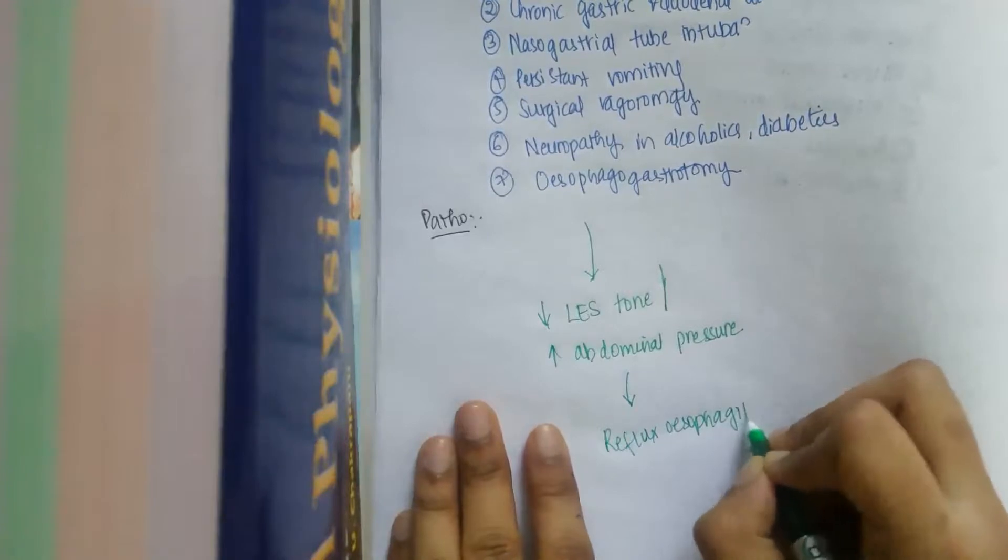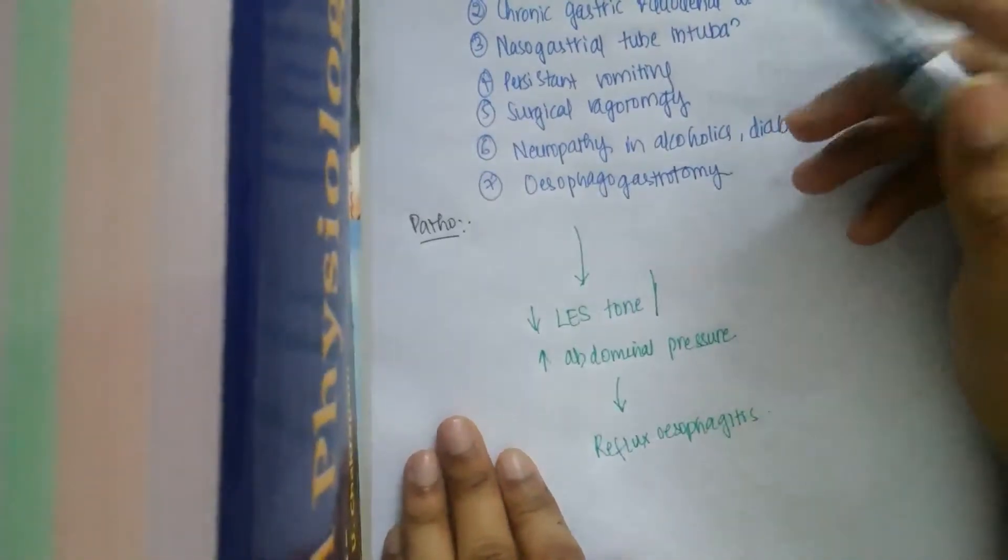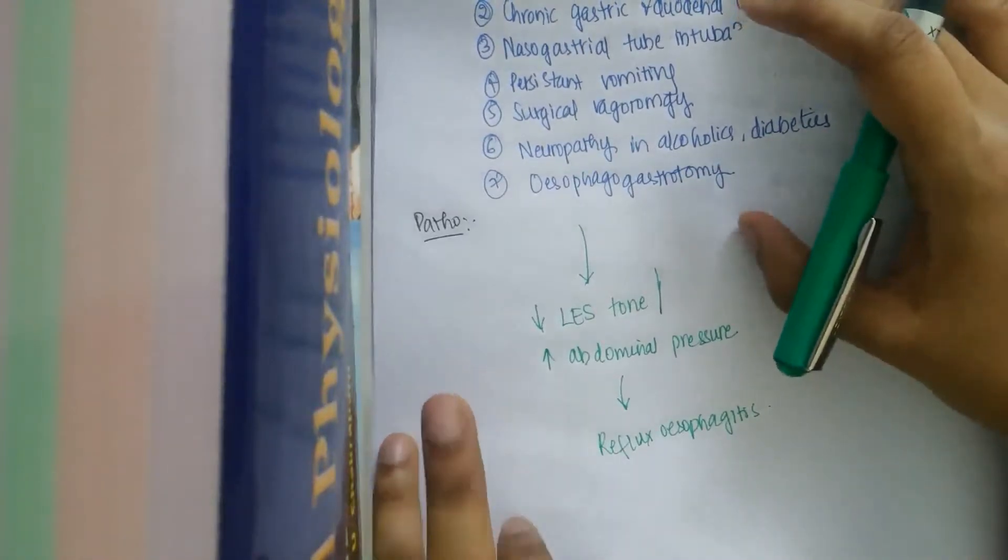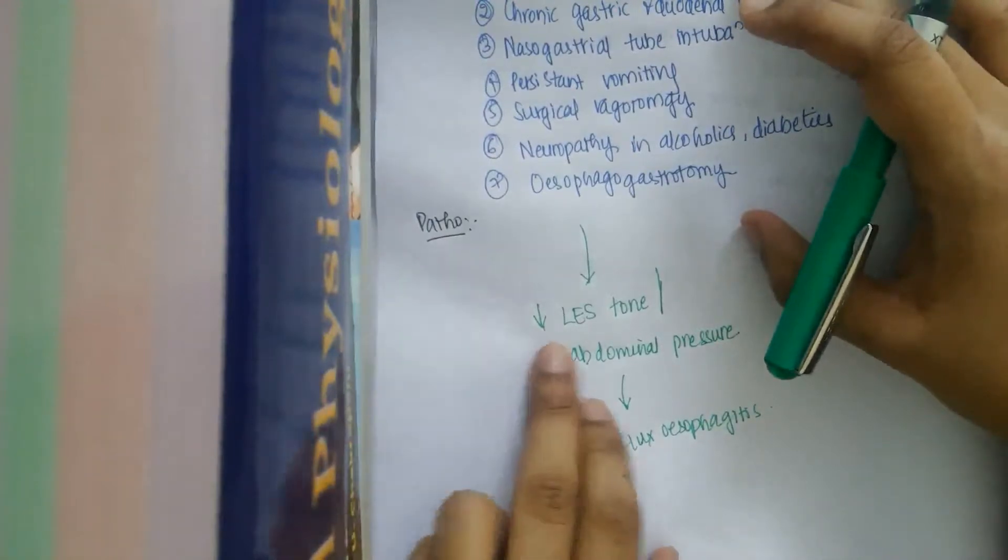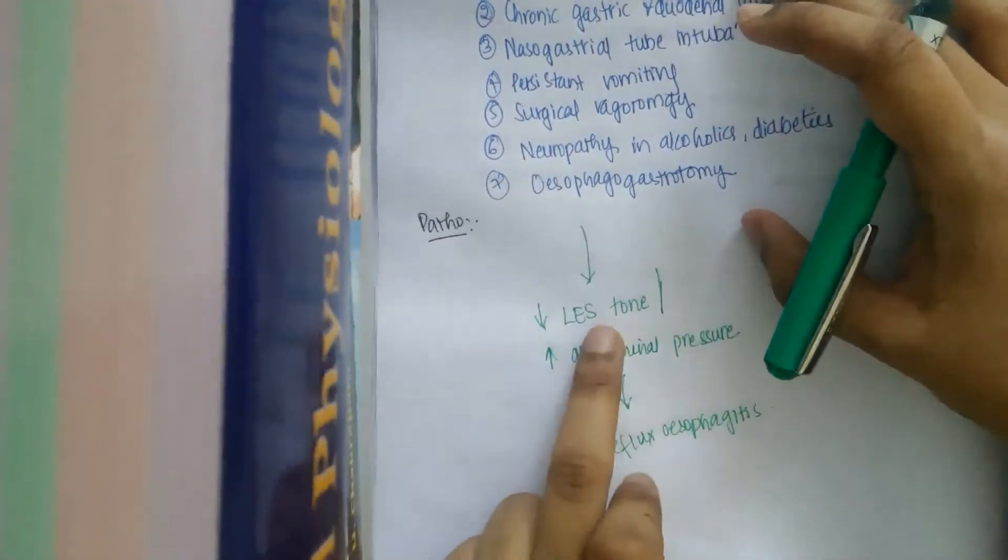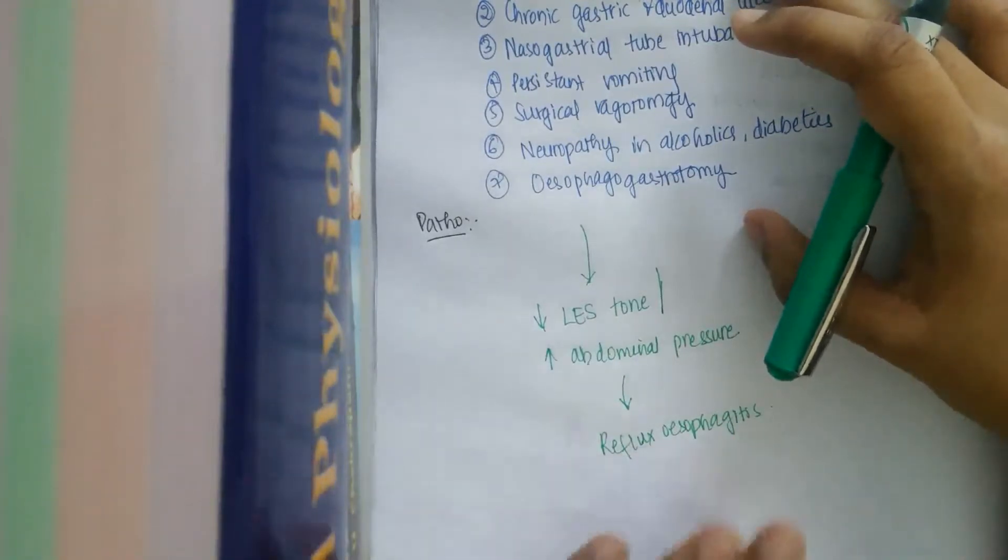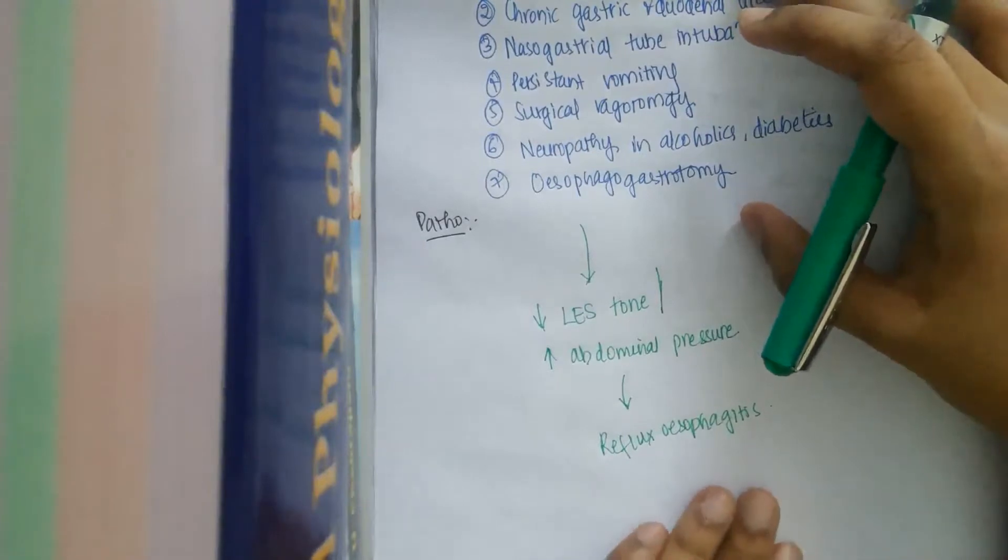My question for you all is, among these seven conditions which I have mentioned, which conditions will increase the abdominal pressure and which conditions will decrease lower esophageal sphincter? Try to find it and answer in the comments. After uploading this video for four to five days, I would give you the answer.